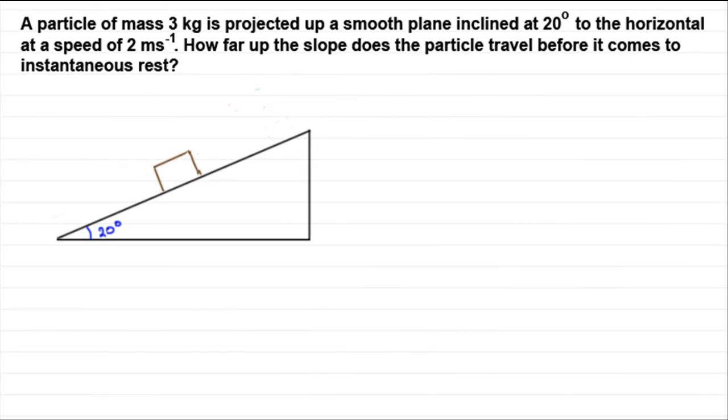Welcome to another tutorial in my series on Newton's second law where we apply force equals mass times acceleration to a particle. I've chosen this example because it brings out features I haven't used in other tutorials. We have a particle of mass 3 kg projected up a smooth plane inclined at 20 degrees to the horizontal at a speed of 2 meters per second. The question is, how far up the slope does the particle travel before it comes to instantaneous rest?